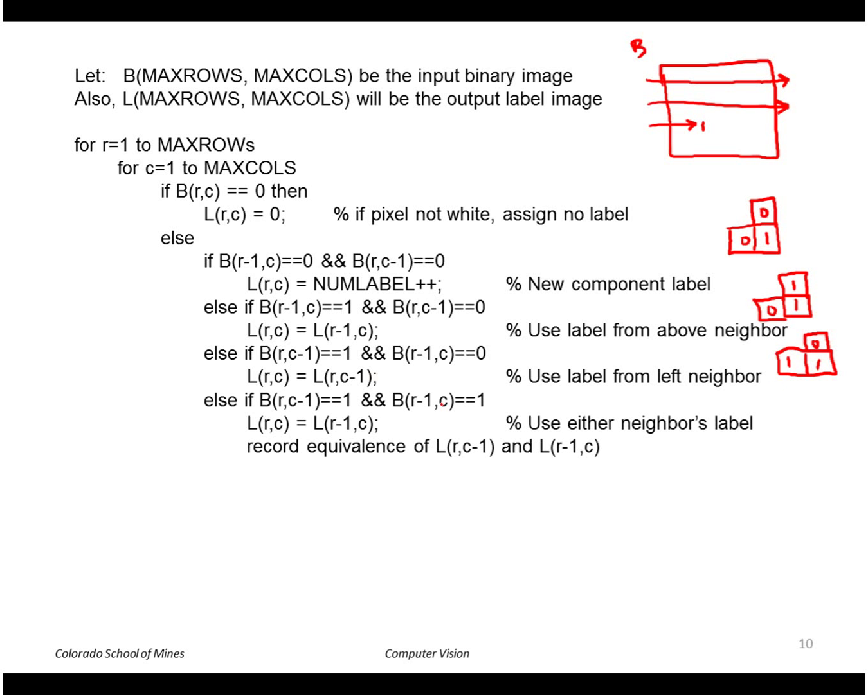And the final case is where both the pixels above and to the left are ones. Now in this case, ideally we would use the same label, these two would be the same label because they're all connected. But there's a chance that the labels will be different. So what we'll do is we'll arbitrarily pick either label, and then we'll record the equivalence of those two. And then we go through L and replace the temporary labels with equivalence labels.